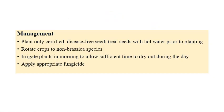For management of Alternaria blight: certified and disease-free seeds are recommended for planting. Treating seeds with hot water before planting is also recommended, as hot water can kill any mycelium or inoculum present. Rotate crops with non-brassica species, since continuous cultivation of brassica crops builds up inoculum. Plants should be irrigated in the morning and allowed to dry by evening. Appropriate fungicides can also be recommended.